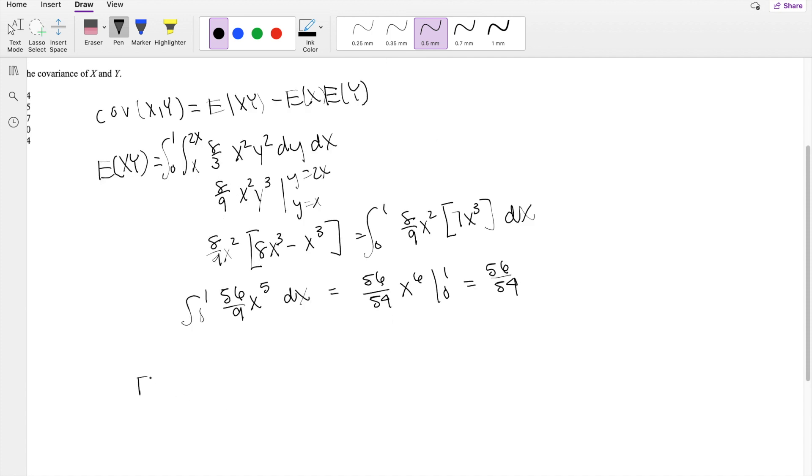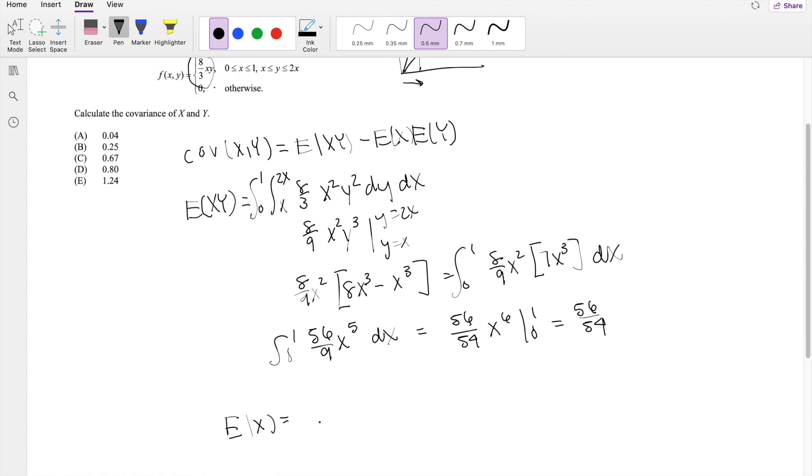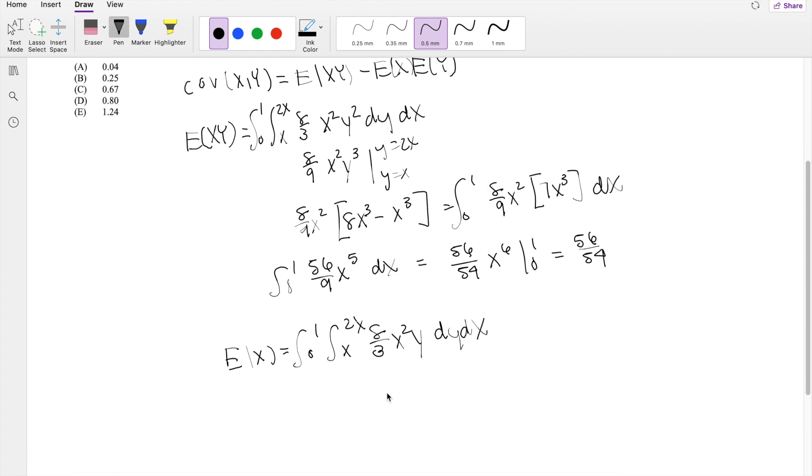Moving on to the expected value of x. The expected value of x is just multiplying, same range here, 0 to 1, x to 2x. But instead of xy like we did before, we're just going to add an extra x in there. So that's going to be x squared y, dy dx. So integrating in terms of dy first, 8 thirds x squared is just a constant. So you get y squared over 2, so 8 over 6 x squared, integrating y from x to 2x.